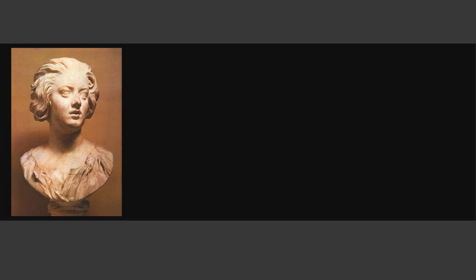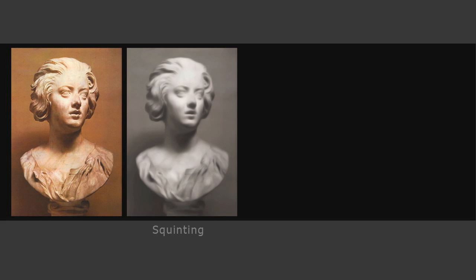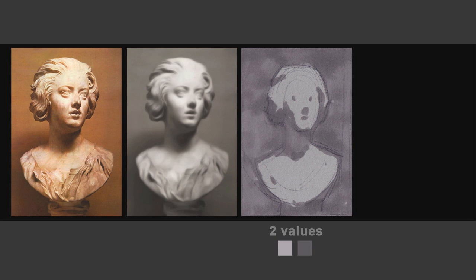Our next example is a portrait bust — a sculpture by Bernini. When we want to make a value judgment, the first thing we want to do is squint, and this is what I see when I squint at the scene. Squinting is a technique we use to help us ignore the color information. To make a two-value statement, I first grouped all of the darks in the background, which included the cast shadow against the wall. Then I grouped the cast shadow on the chin and the neck with the value of the wall — grouped them all together.